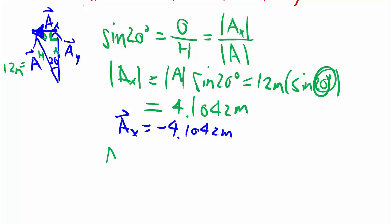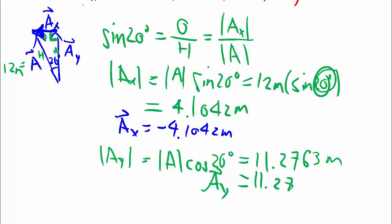So similarly for Ay, Ay being adjacent, so we use cosine, and the calculator gives us this number. Ay is upwards, which we have defined to be positive, so Ay as a vector is simply that.